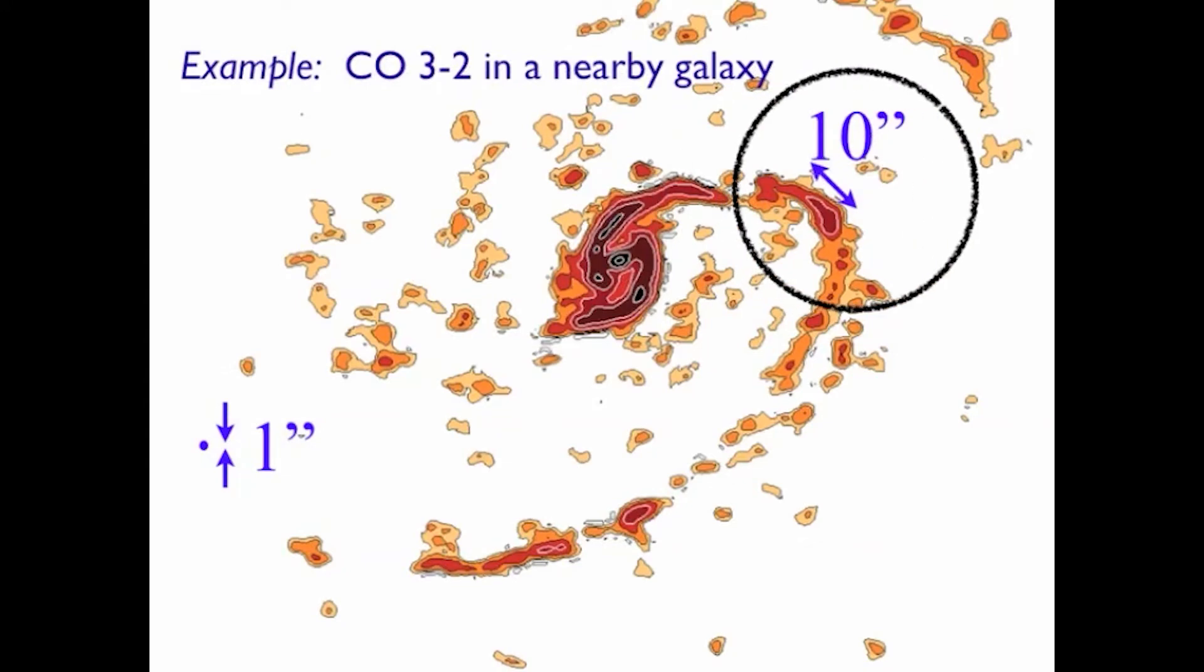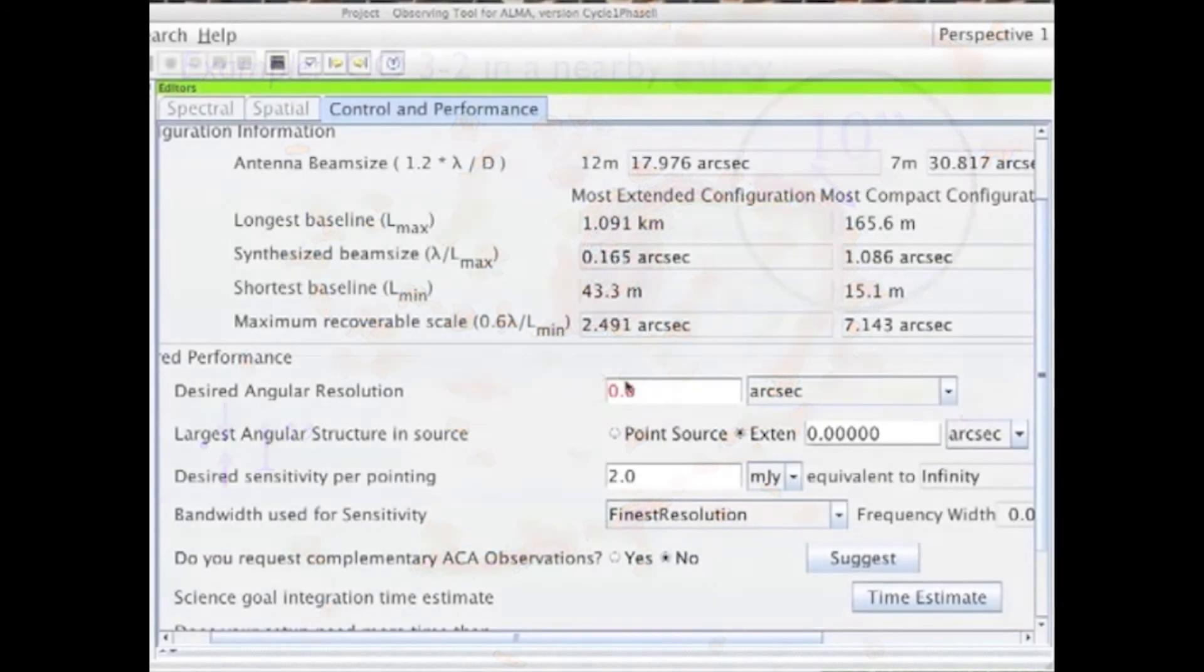Since the CO emission will only originate from these clouds, we want an observation that will be sensitive to a range of scales from one arc second to 10 arc seconds.